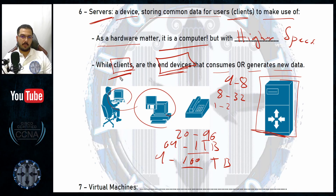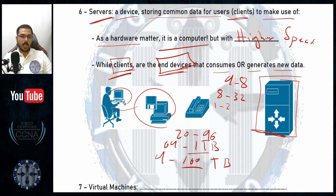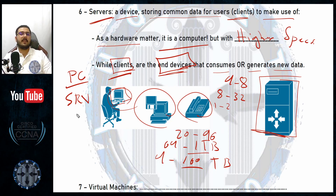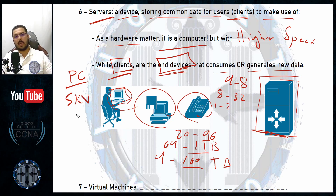Clients and endpoints — or end devices — refer to the same thing: devices that humans use and interact with directly every day. A desktop computer, laptop, server, IP phone, mobile phone, printer, and IP camera are all end devices or endpoints. Any device with an operating system that you log into directly, use a GUI with, or work with directly is an endpoint. Routers, switches of all types, and firewalls are NOT endpoints.